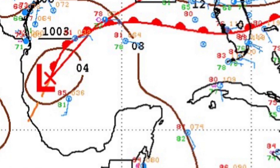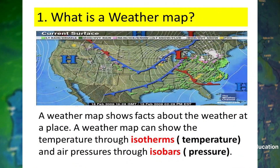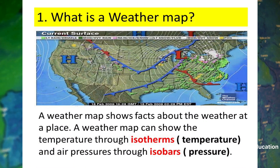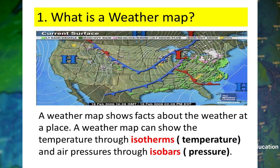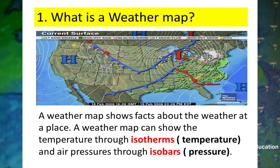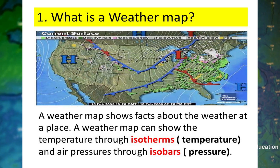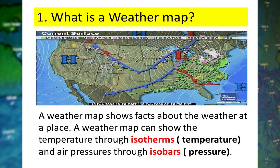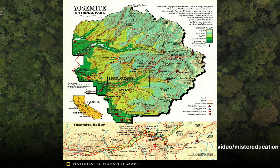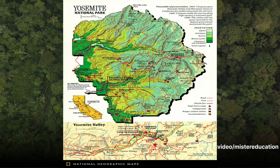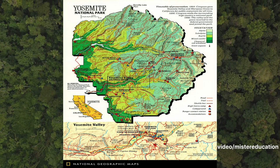Unlike a physical map, a weather map serves a very different purpose. It gives a quick visual of our atmosphere — temperature, wind speed, humidity, and precipitation. It's a meteorologist's best friend, instrumental in forecasting weather and tracking storms.